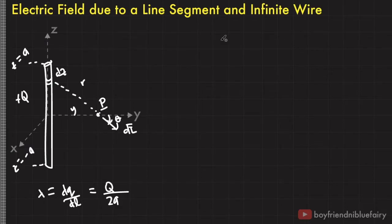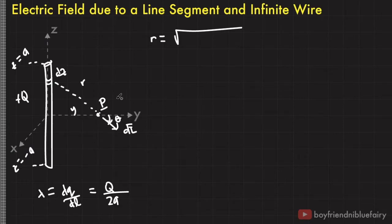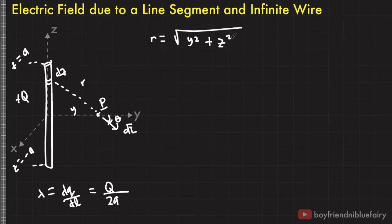Based on the figure, the distance r from dz to point P is equal to the square root of the sides of the triangle: y and z. So r is equal to the square root of y squared plus z squared.